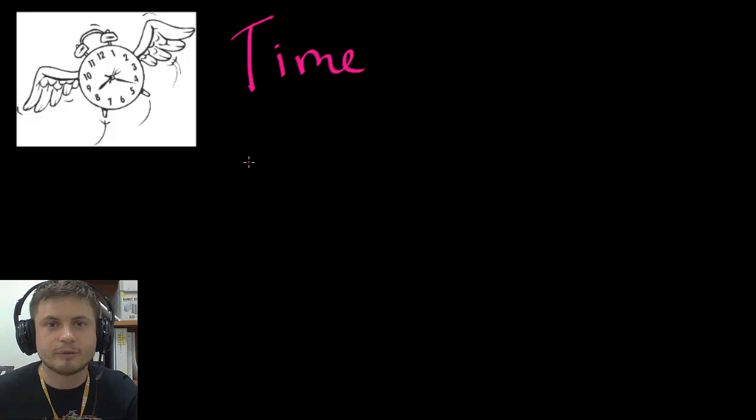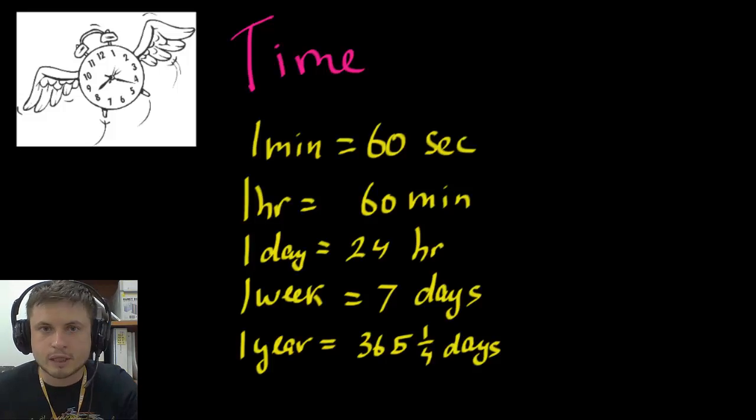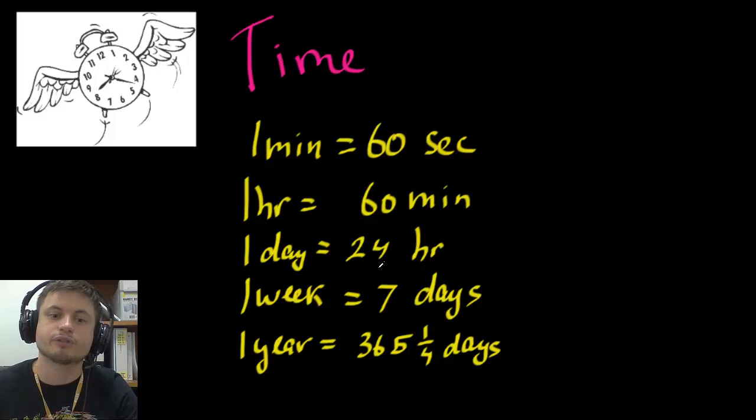Let's start with a little bit of history and basically let's take a look at how time is expressed in the modern world. Now I hope I don't have to explain to you that we measure minutes in 60 seconds, hours in 60 minutes, one day has 24 hours, one week has seven days, and one year has 365 and a quarter days.